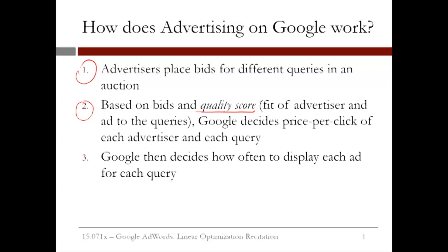which basically measures how well a particular ad fits to a particular query, to decide a quantity known as the price per click. Google does this for each advertiser in each query. Finally, and this is where optimization plays a key role, Google decides how often to display each ad for each query. This problem, as we will see shortly, can be formulated as a linear optimization model.